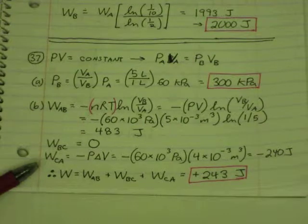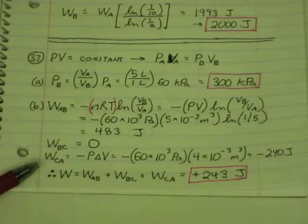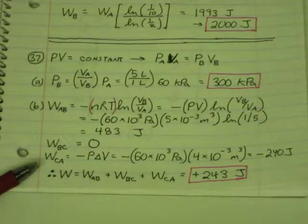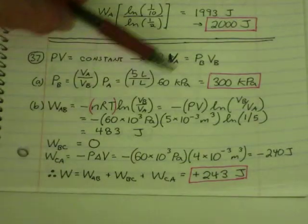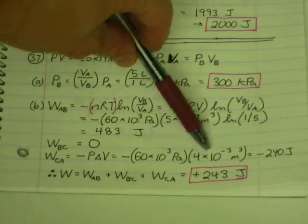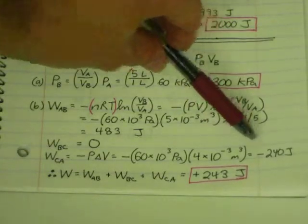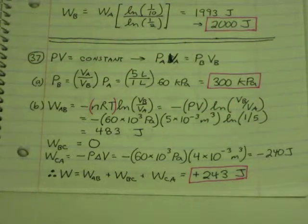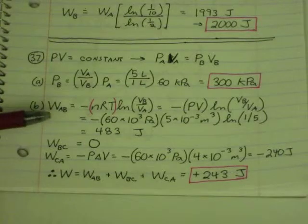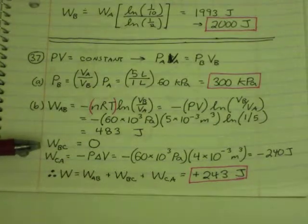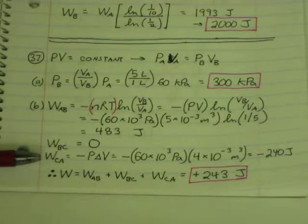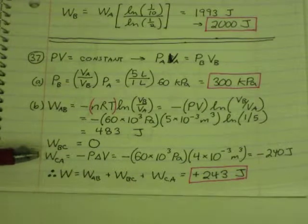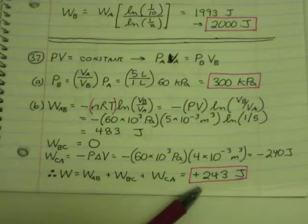So that's negative P delta V. So we have the pressure, 60 times 10 to the third pascals, times the change in volume. It goes from 1 to 5, so 5 minus 1 liters is 4 liters. But I need that in MKS units if I want all this to come out in joules. So 4 times 10 to the negative 3 cubic meters. And we get negative 240 joules. So the first path, AB, there was positive work done as the gas was compressed. BC, 0 work done. CA, negative work done as the gas expanded. And so you add up those works and you get a total of positive 243 joules.